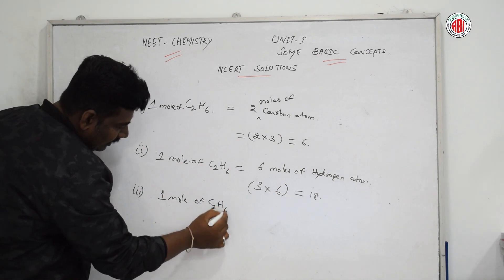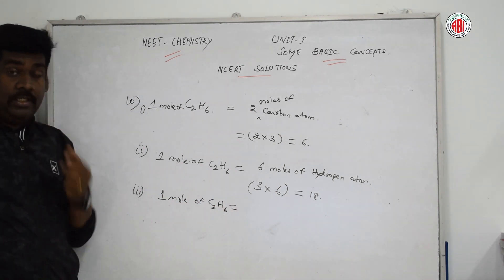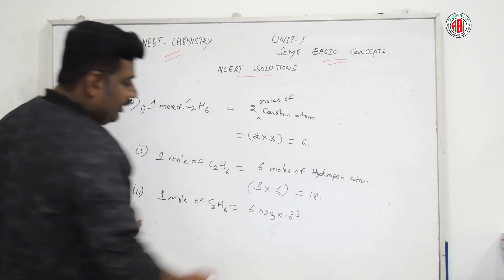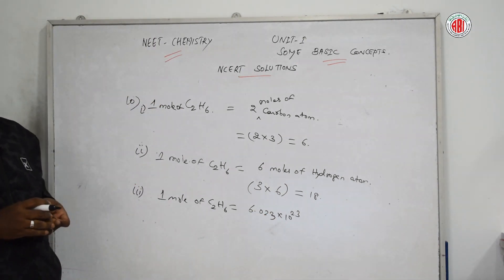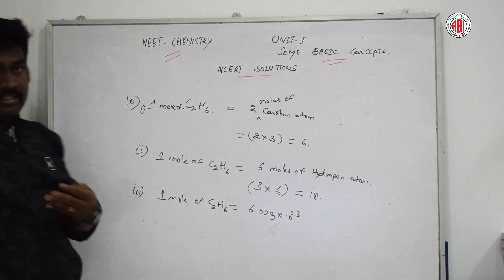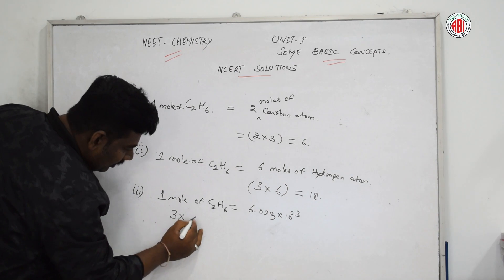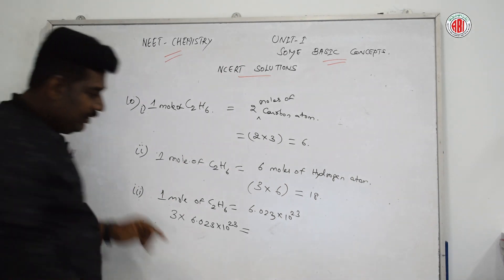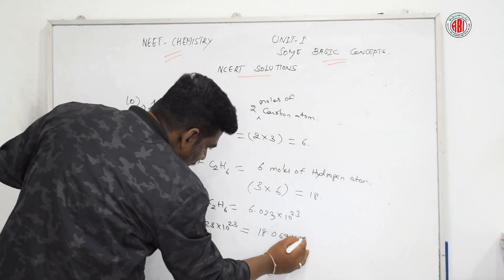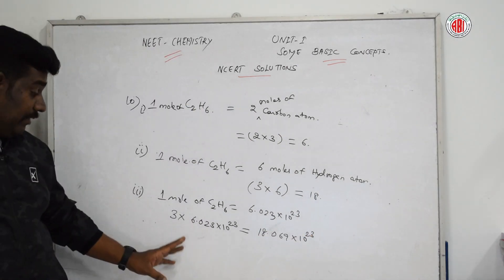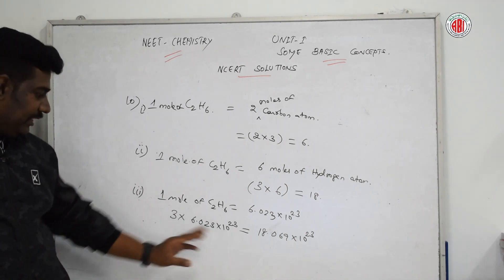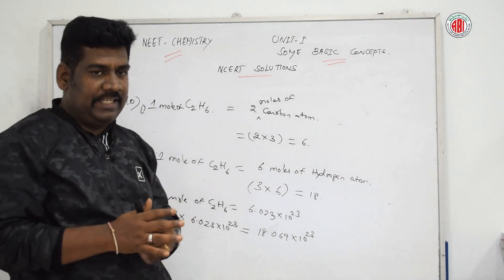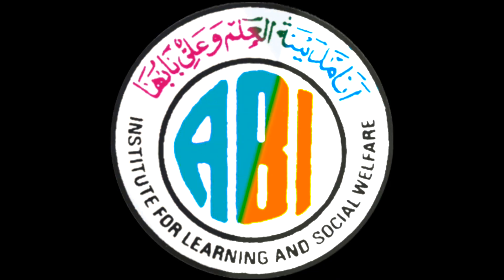For the number of molecules: one mole of C₂H₆ contains 6.023 × 10²³ molecules (Avogadro's number). Therefore, three moles of ethane contains 3 × 6.023 × 10²³ = 18.069 × 10²³ molecules. By this way we can solve this problem. Thank you.